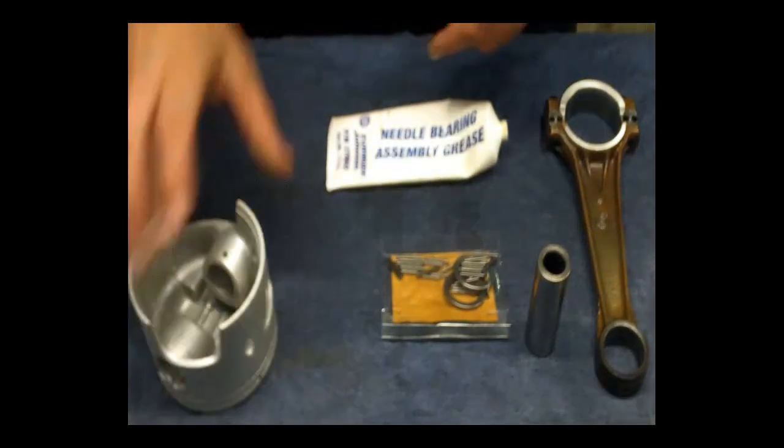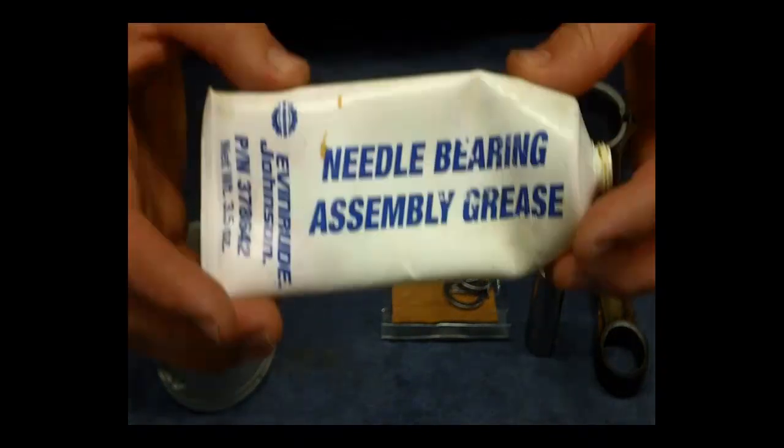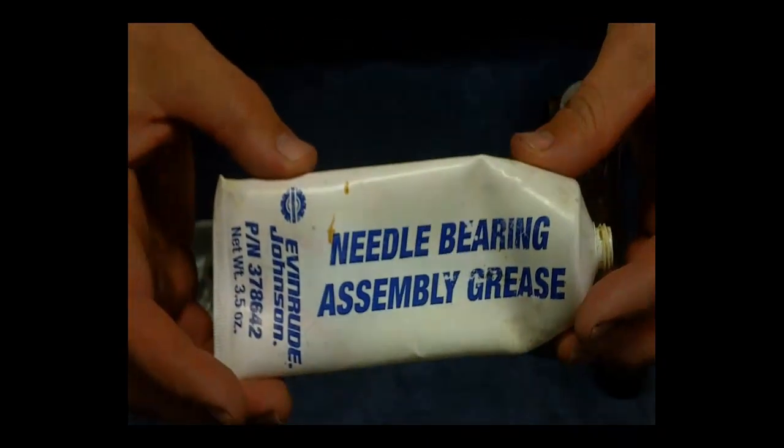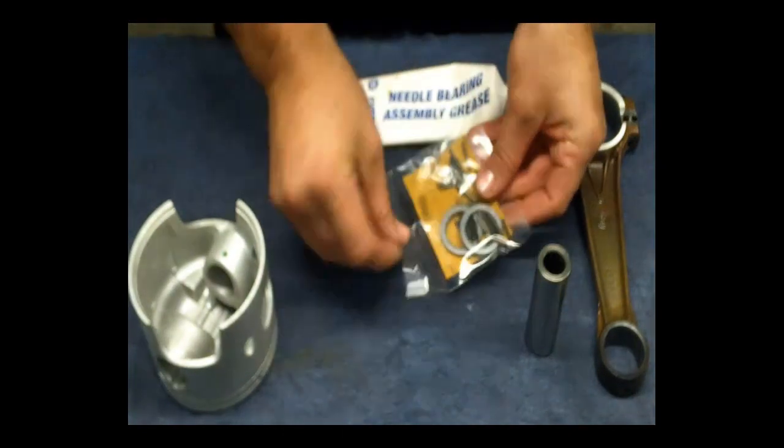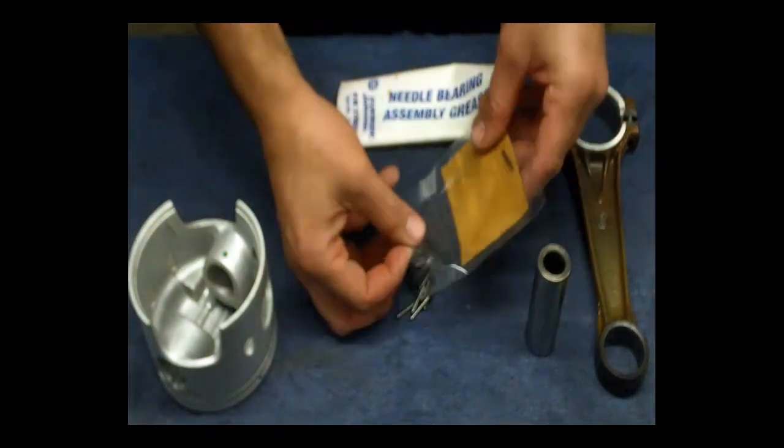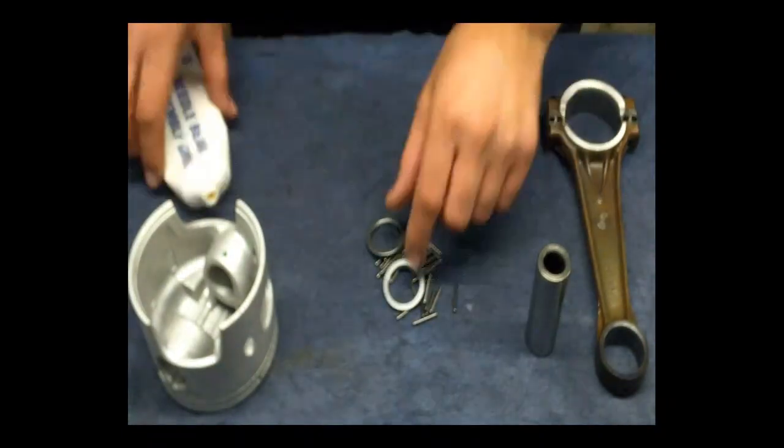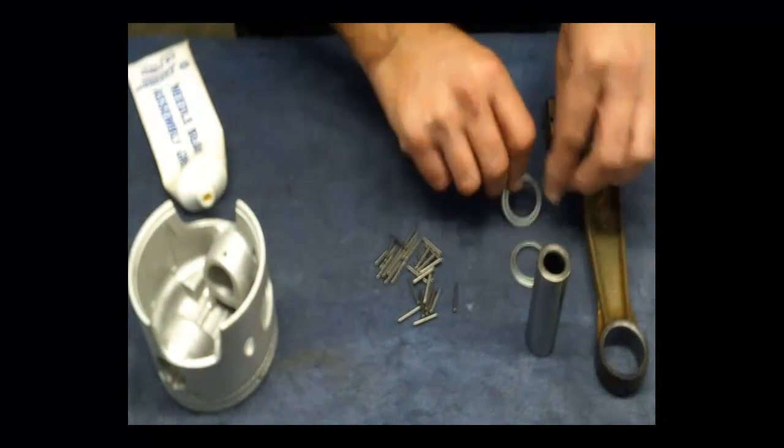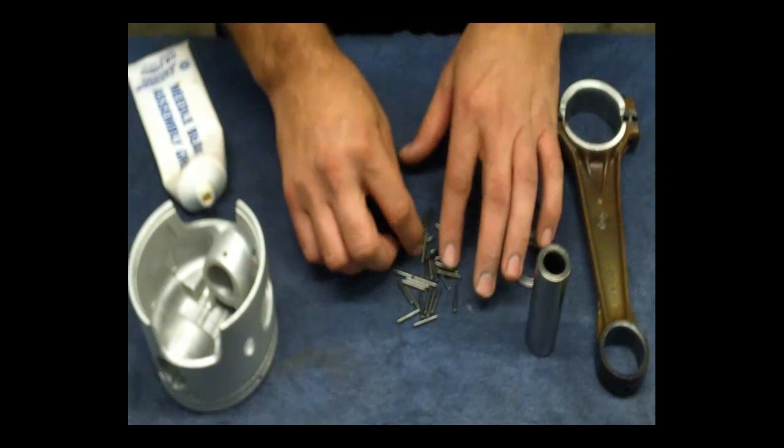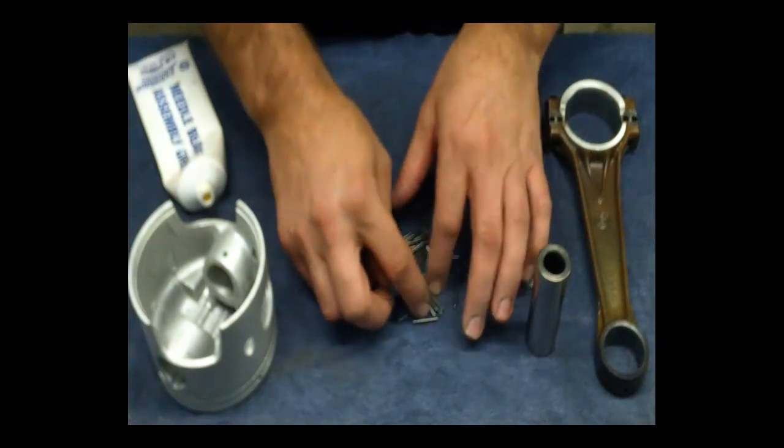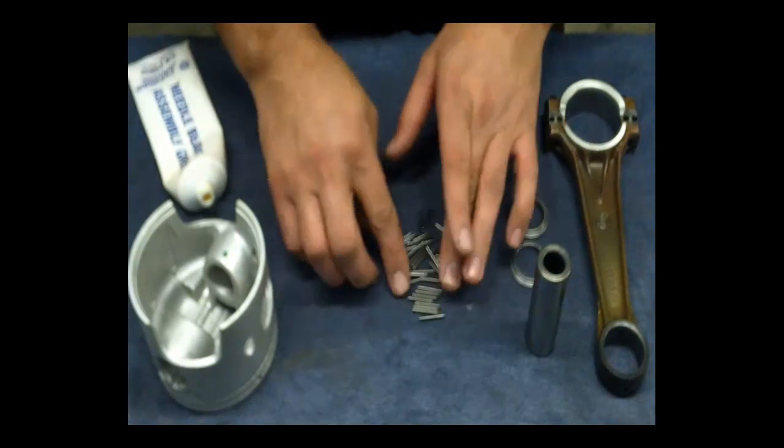Okay, so I have the conrod ready. My Johnson Evinrude Needle Bearing Assembly Grease. Now this is specially designed grease for assembling needle rollers. I do recommend when you are installing a piston, clean the needle rollers even though they are brand new and out of a packet. I always clean them. I am not for this video just to save time, so I will be pulling this piston back off and cleaning these needle rollers.